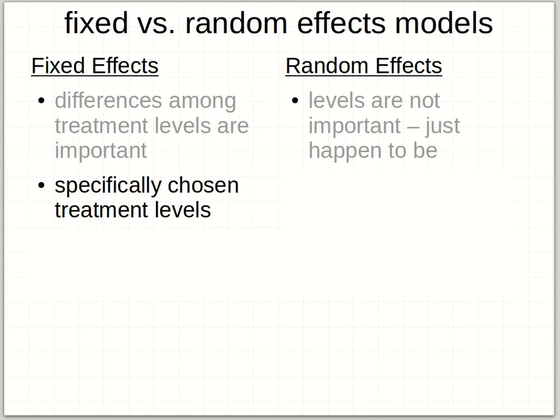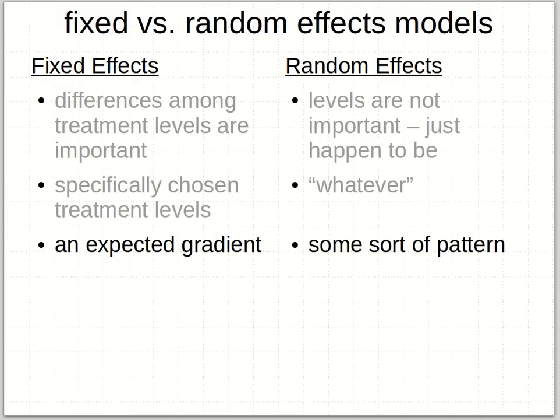Maybe another way to think about it: you've specifically chosen certain treatment levels for a fixed effect — you want to know the effects of low versus medium versus high levels of fertilizer on your tomato crop. If it's a random effect, you're saying you don't really want to know how much of that was going on. You just need to account for the fact that there was something different in the soils. An expected gradient would be a fixed effect — you set up blocks in a greenhouse where blocks closest to the window receive the most light and those furthest away get less. In a random effect, you don't know what the pattern might be in advance; you're just hoping that some of the noise in your analysis is captured by setting up some sort of pattern.